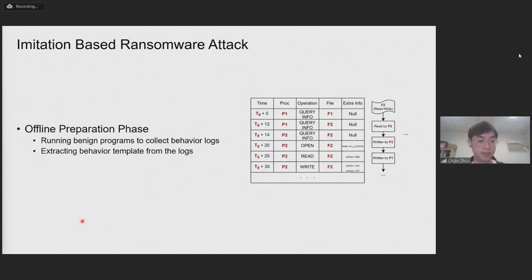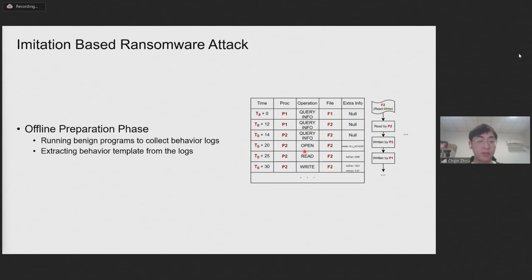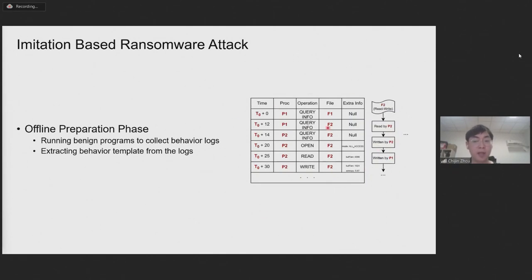The first is the offline preparation phase. During this phase, our focus is on gathering the runtime behavior of a benign program. Specifically, we want to determine how and when a process of this program accesses a file — like how the process opens a file, how many bytes it reads, and how many bytes it writes. We also analyze if the access pattern of a specific file matches some exploitable patterns. In this example, the access pattern matches a write-after-read pattern, and we obtain a behavior template after this phase.